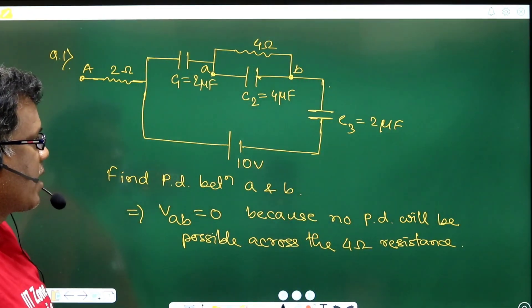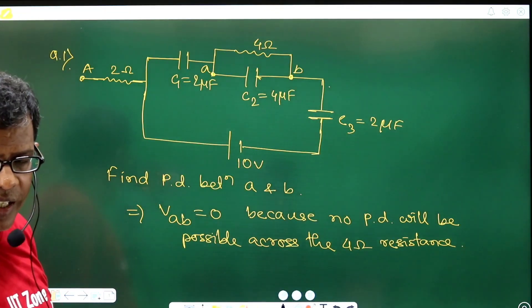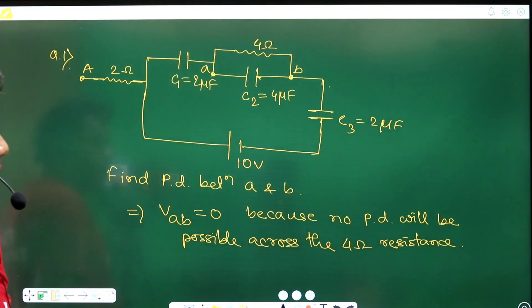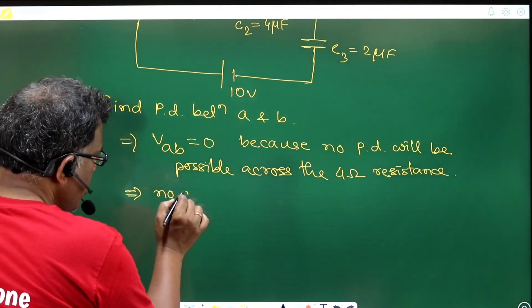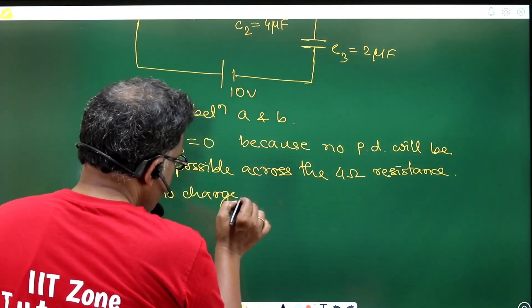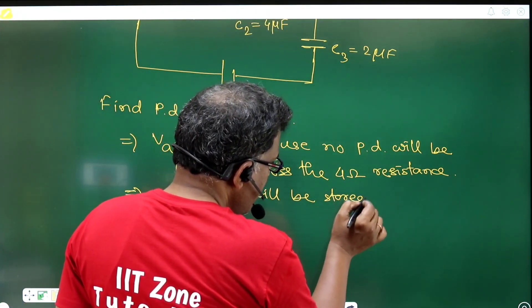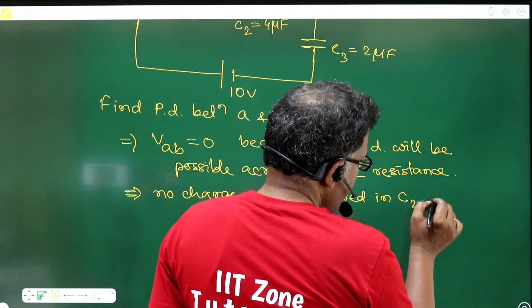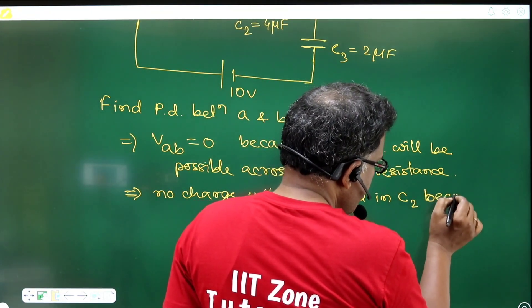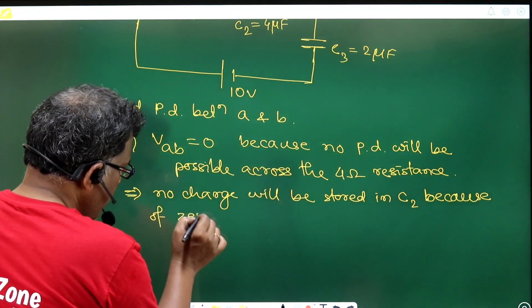So a simple conducting wire creates no PD, means between a and b there will be no potential drop possible. So that's why the capacitor C2 at steady state will not store any charge in it. This implies zero potential drop suggests no charge will be stored in C2 because of zero potential drop.